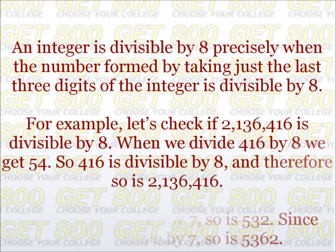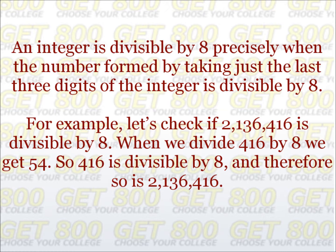An integer is divisible by 8 precisely when the number formed by taking just the last 3 digits of the integer is divisible by 8. This is similar to the rule for 4, but you need 3 digits instead of 2, so it's a little harder to apply. For example, let's check if 2,136,416 is divisible by 8. When we divide 416 by 8, we get 52, so 416 is divisible by 8, and therefore so is 2,136,416. As you can see, this rule isn't really practical as far as the SAT is concerned.